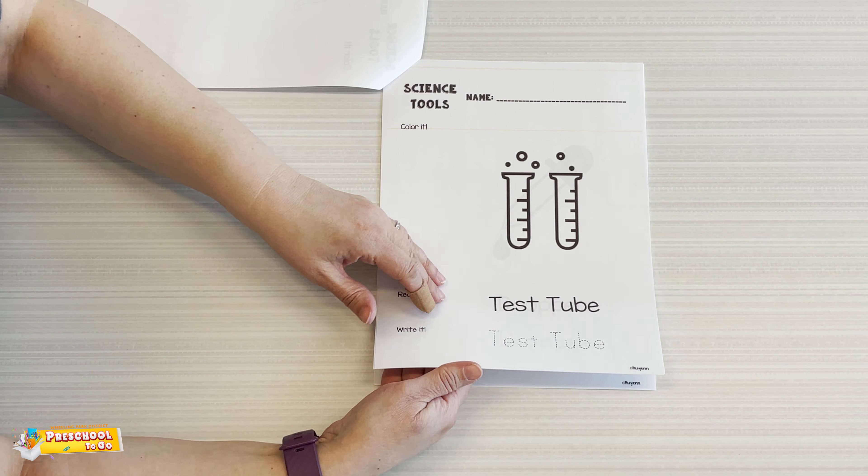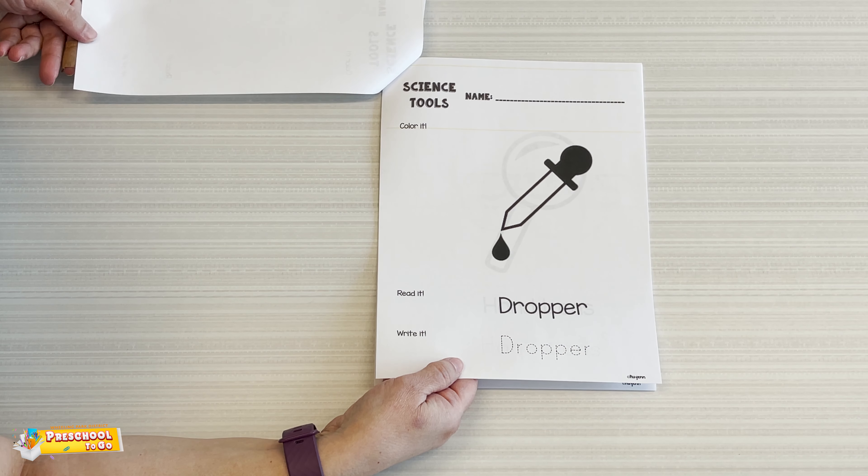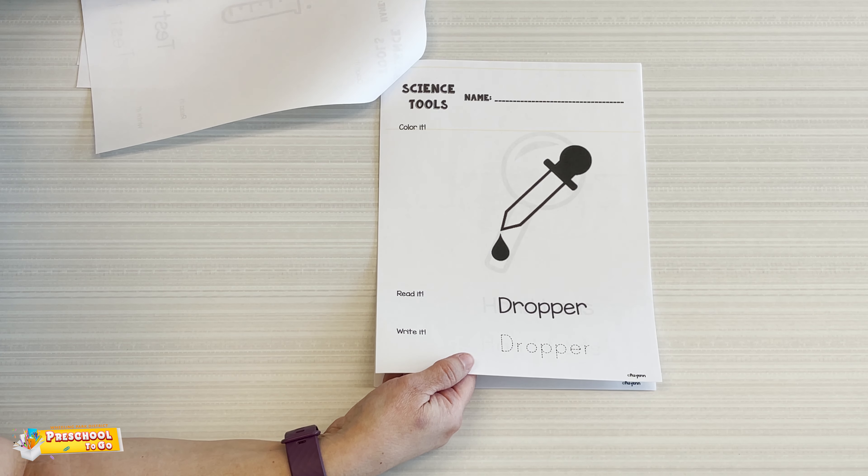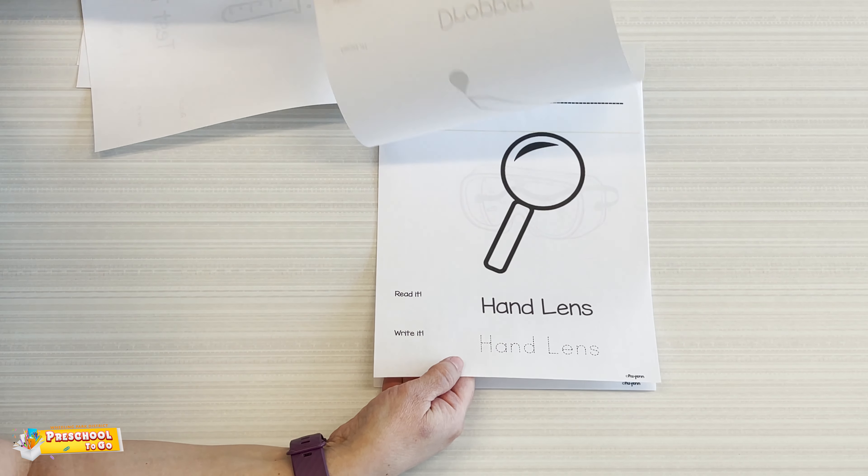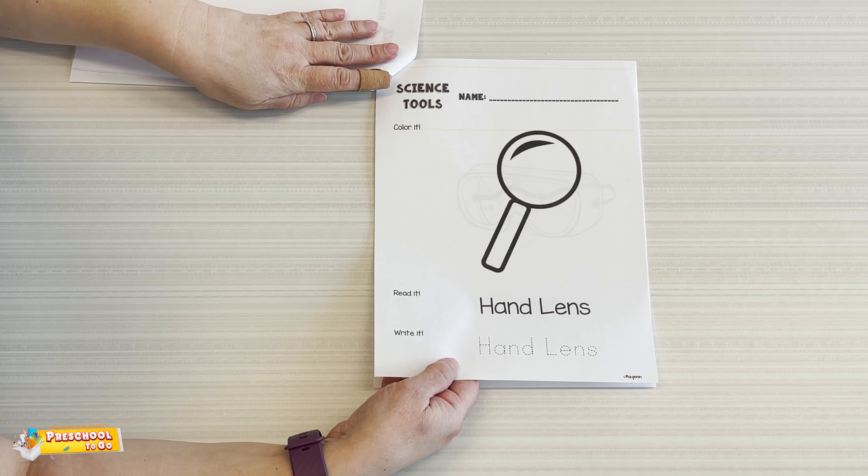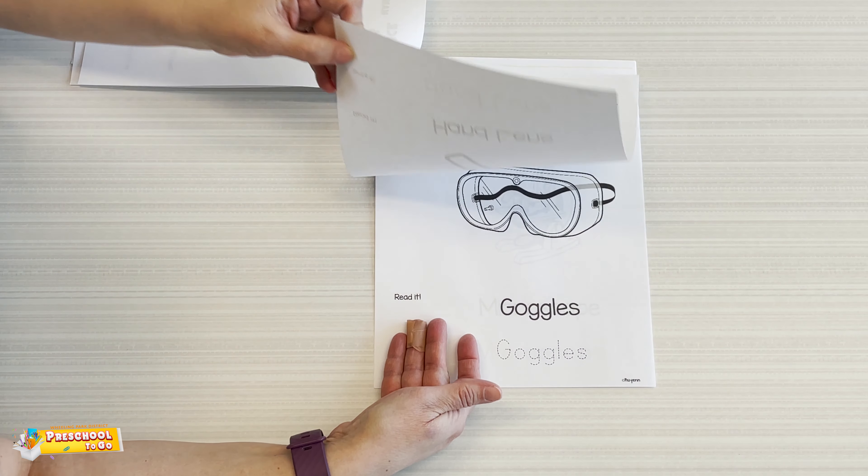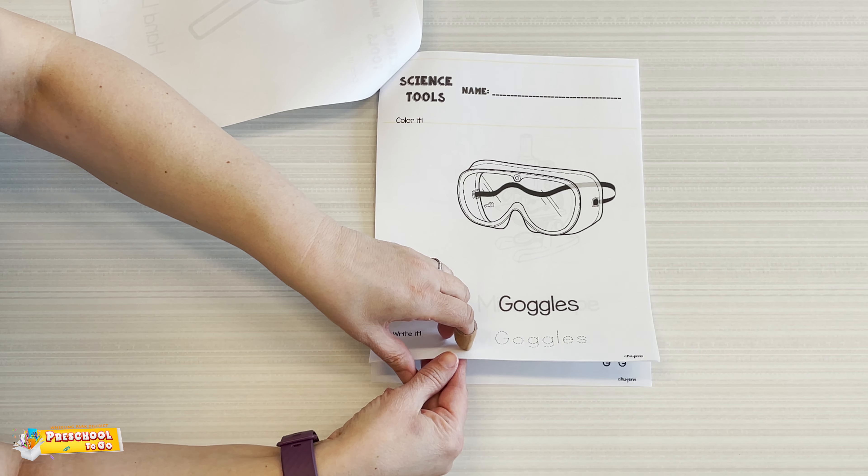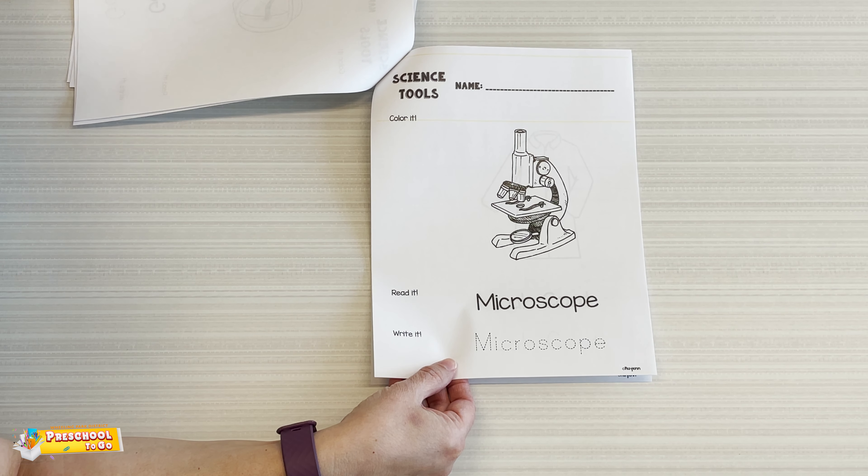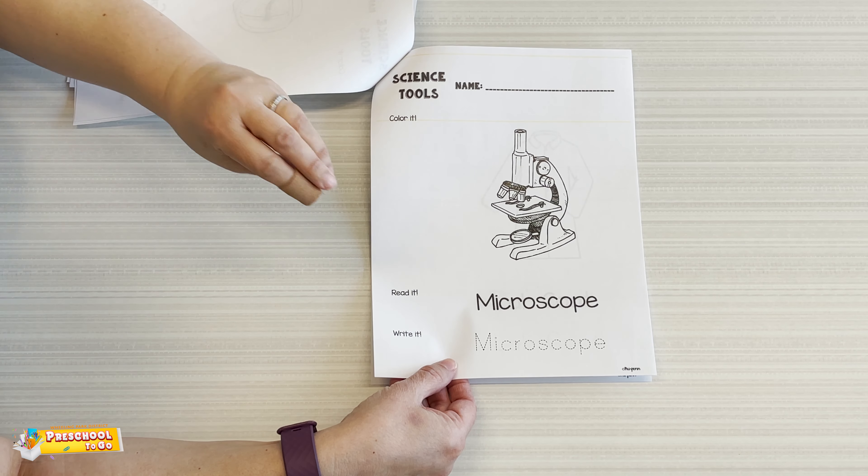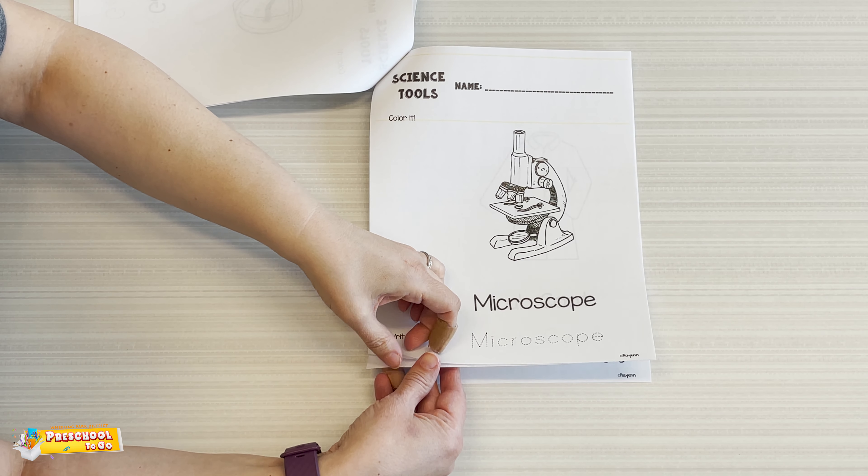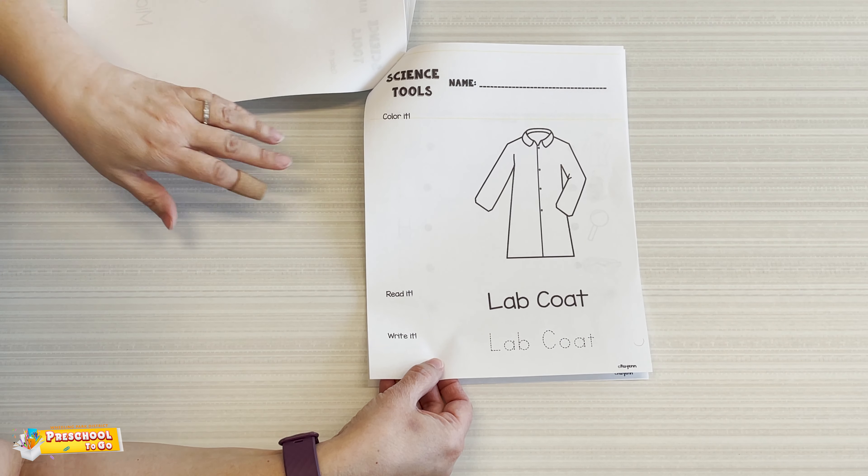Here are test tubes. A dropper to take water from one thing to another. A hand lens or a magnifying glass. Goggles. A microscope. That makes things that are really tiny really big so you can see really close. A lab coat.